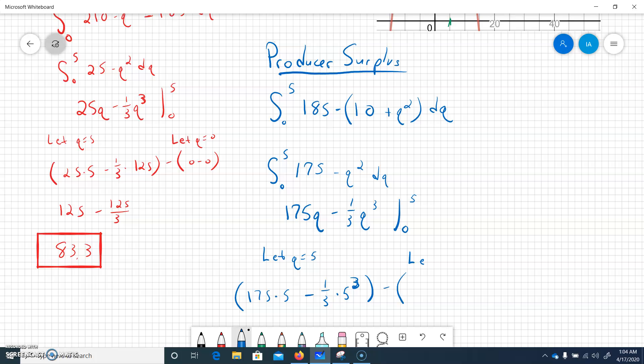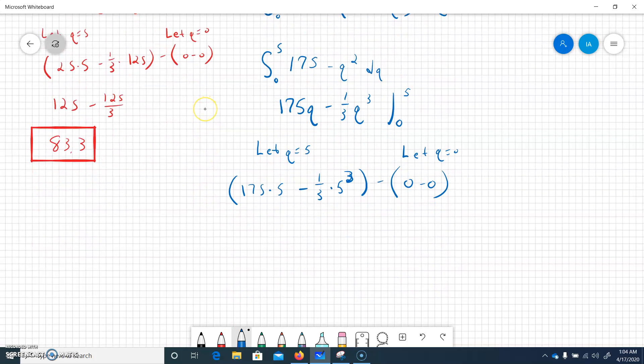So 175 minus 1/3 q cubed, and now that is running from 0 to 5. So let's put our numbers in, let q equal 5. So what do we get? We get 175 times 5 minus 1/3 times 5 cubed, and then minus when we let q be 0.